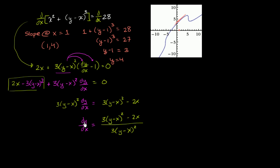So what is the derivative of y with respect to x? What is the slope of the tangent line when x is 1 and y is equal to 4? Well, we just have to substitute x is equal to 1 and y equals 4 into this expression. So it's going to be equal to 3 times (4 - 1) squared minus 2 times 1, all of that over 3 times (4 - 1) squared.